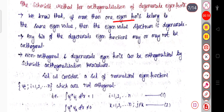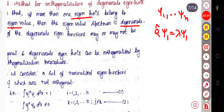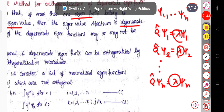If more than one eigenfunction belongs to the same eigenvalue, then the eigenvalue spectrum is degenerate. Suppose there are eigenfunctions ψ₁, ψ₂, ψ₃, up to ψₙ, and when an operator Q̂ operates on ψ₁ it gives eigenvalue λ and eigenfunction ψ₁, and similarly for ψ₂ giving the same eigenvalue λ, and so on up to Q̂ψₙ = λψₙ. So these eigenvalues are degenerate in nature.